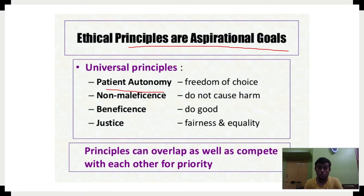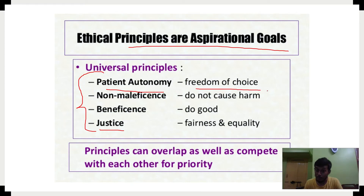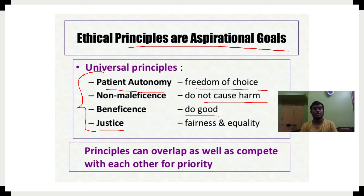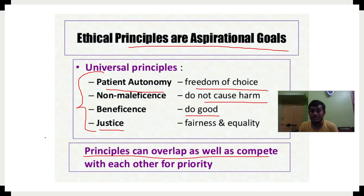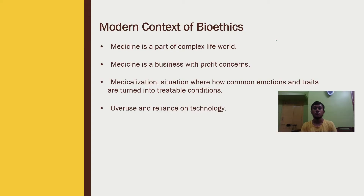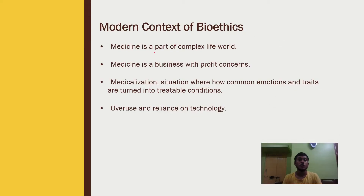The ethical principles are aspirational goals. The universal principles include: patient autonomy — the freedom of choice; non-maleficence — do not cause harm; beneficence — do good; and justice — fairness and equality. Importantly, these principles can overlap as well as compete with each other for priority depending on the situation.